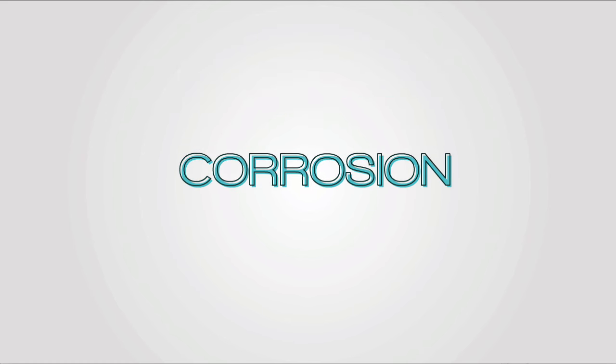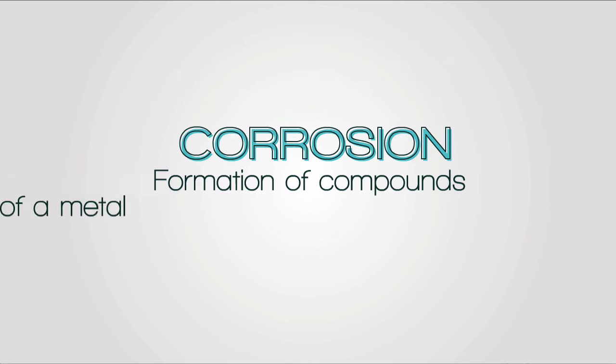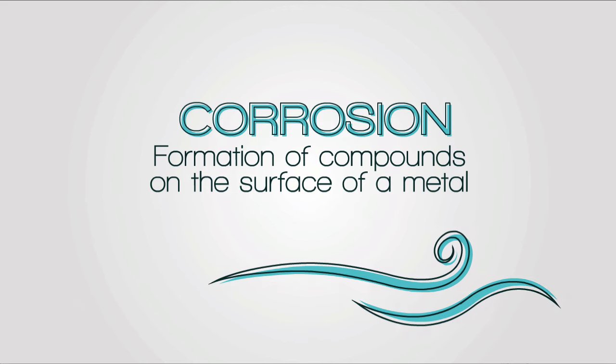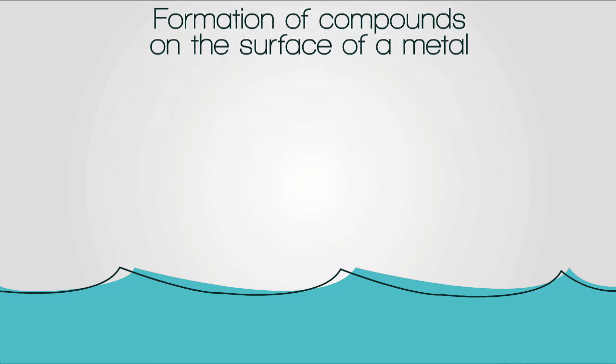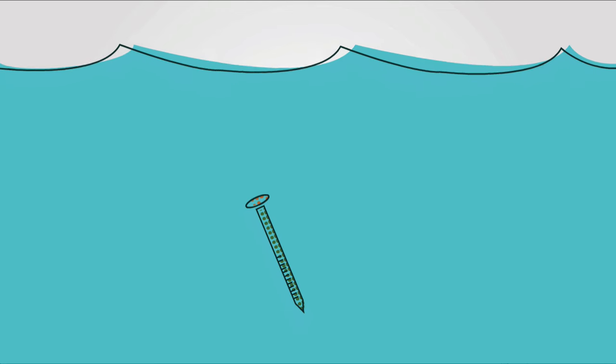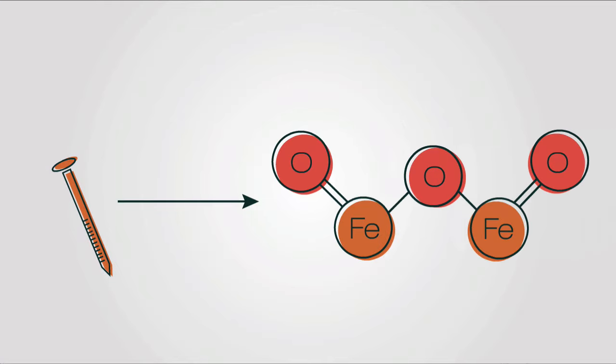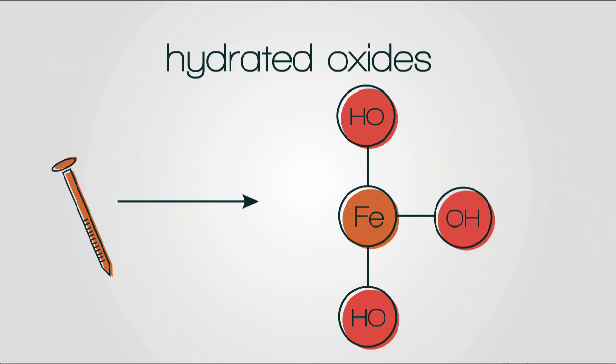This is because of corrosion. Corrosion is described as formation of compounds on the surface of a metal when it is exposed to air and or water or an electrolyte like salt water. Typically once a metal corrodes it forms compounds known as oxides or hydrated oxides.